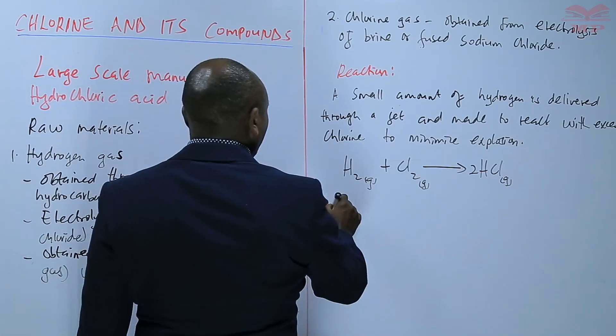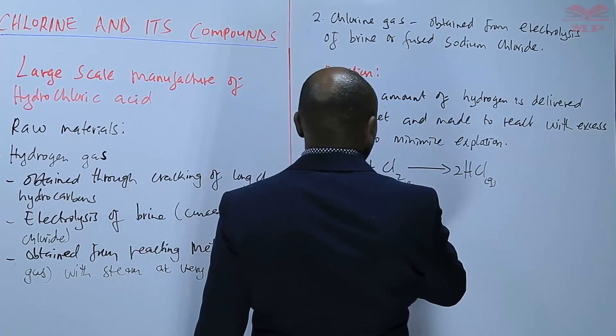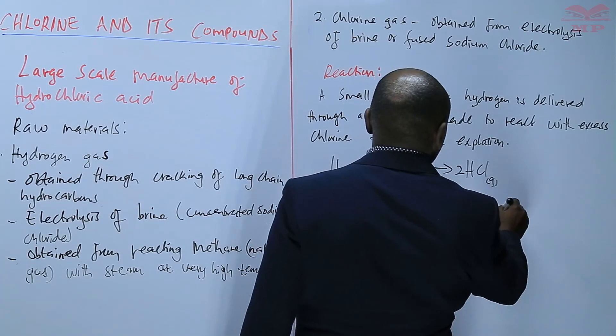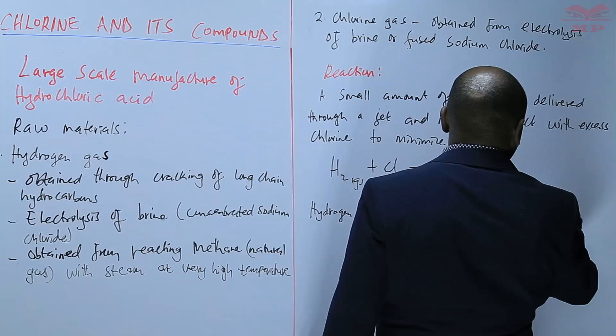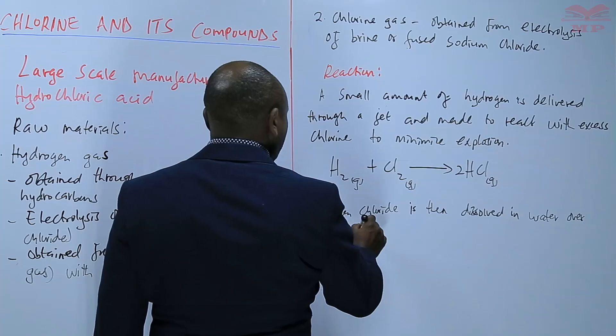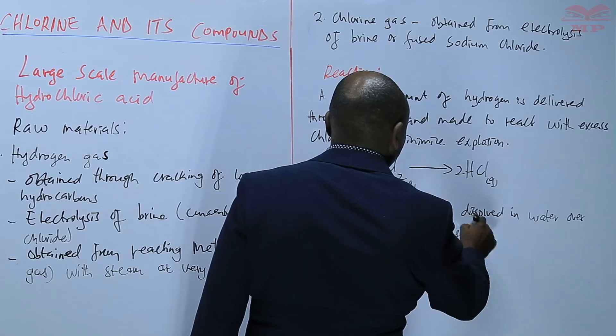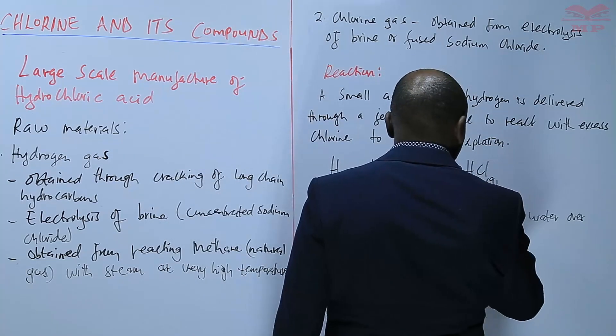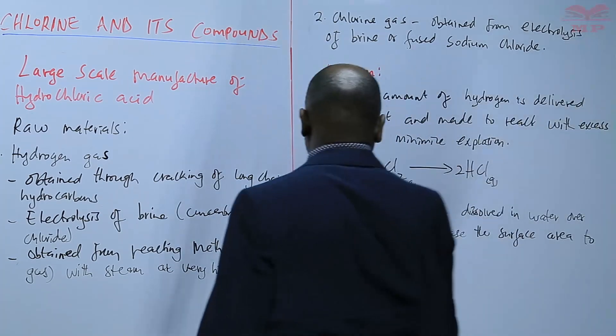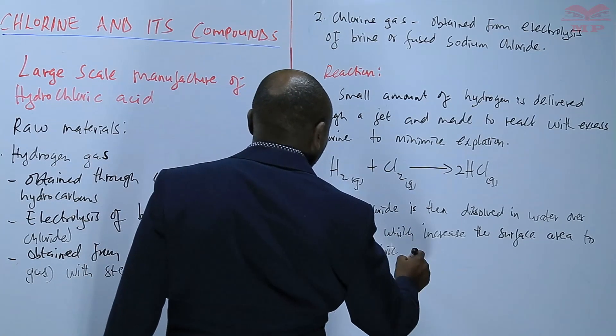So hydrogen chloride gas that we have obtained here is highly soluble in water. So it is then dissolved in water over glass beads, which increase the surface area. The glass beads increase the surface area to form hydrochloric acid.